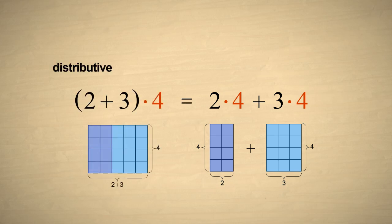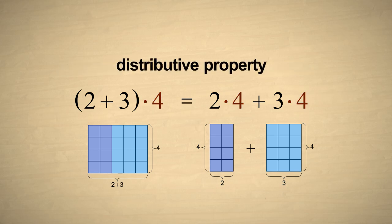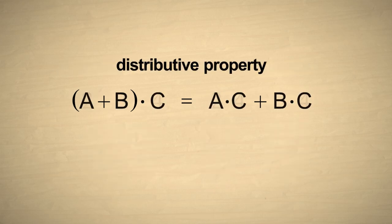This is called the distributive property of multiplication over addition, or for short, the distributive property. Once again, if we use the letters A, B, and C instead of numbers, we can write this property in a more general way.